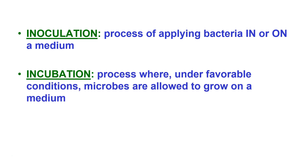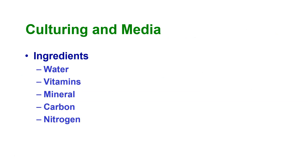There are certain definitions we need to understand. Inoculation is the process of applying bacteria in or on a medium — we take something like a culture plate that has media in it and we inoculate it. Incubation is the process where, under favorable conditions, microbes are allowed to grow on a medium. For incubation, we have to have the proper temperature; if the temperature is not correct, it's not going to grow.